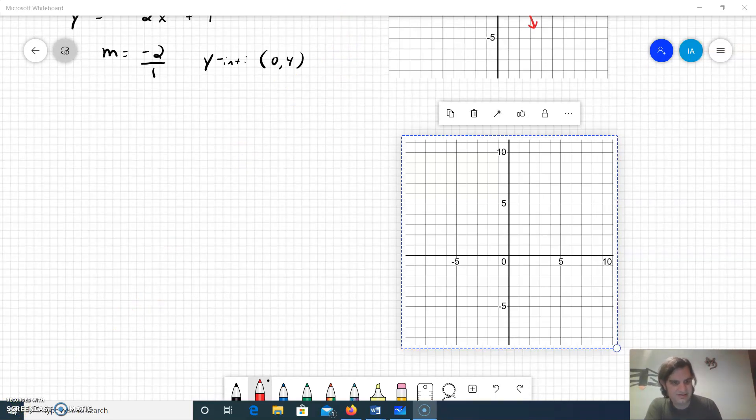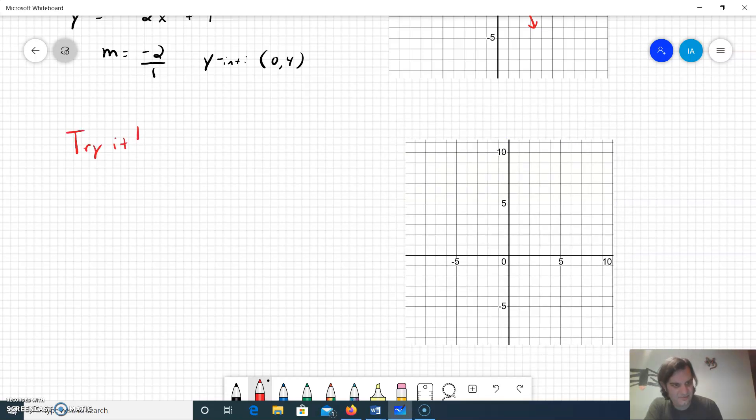We're going to set up another example that you can try on your own. We're going to put one up here that says you try it. We're going to start with the equation 4x equals 3y minus 6. This is the equation I'm going to give you to start with. Put it in slope-intercept form and then try and graph it. Pause this and try it, and then I'm going to go right into the example.